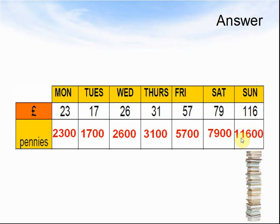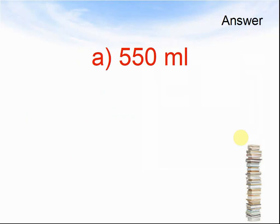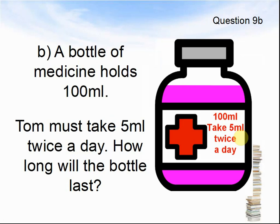Let's look at the next question. Question 9a. How much water is in the jug? Pause the video to find out. Here comes the answer. Let's look at the next question. A bottle of medicine holds 100 milliliters. Tom must take 5 milliliters twice a day. How long will the bottle last before he runs out of medicine? Pause the video until you think you know the answer. Here comes the answer. 10 days.